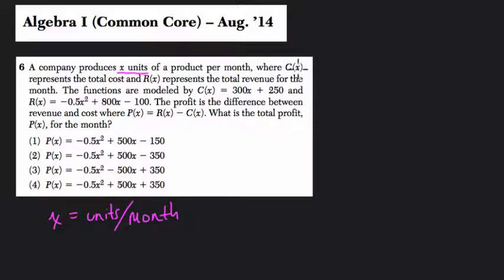And c of x, now this is function notation. It means an output c based on the input x. You can think of c as the output, but really that could mislead you. Think of c of x as the output and x is your input. And that represents the total cost. So c of x is the total cost based on the number of units we produce per month based on x.